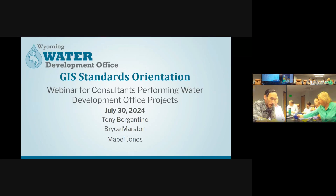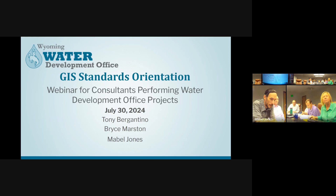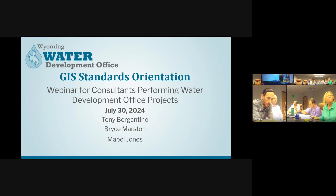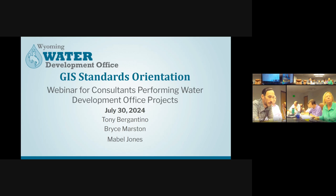The webinar will cover Wyoming Water Development Office's GIS data collection and management standards, an effort initiated in 2016 to improve management of GIS data, developed for level one and level two planning projects. Working with a multi-agency steering group, core data sets key to the business needs of the agency were defined. Those core data sets support understanding of water use, water supply, and water project feasibility.